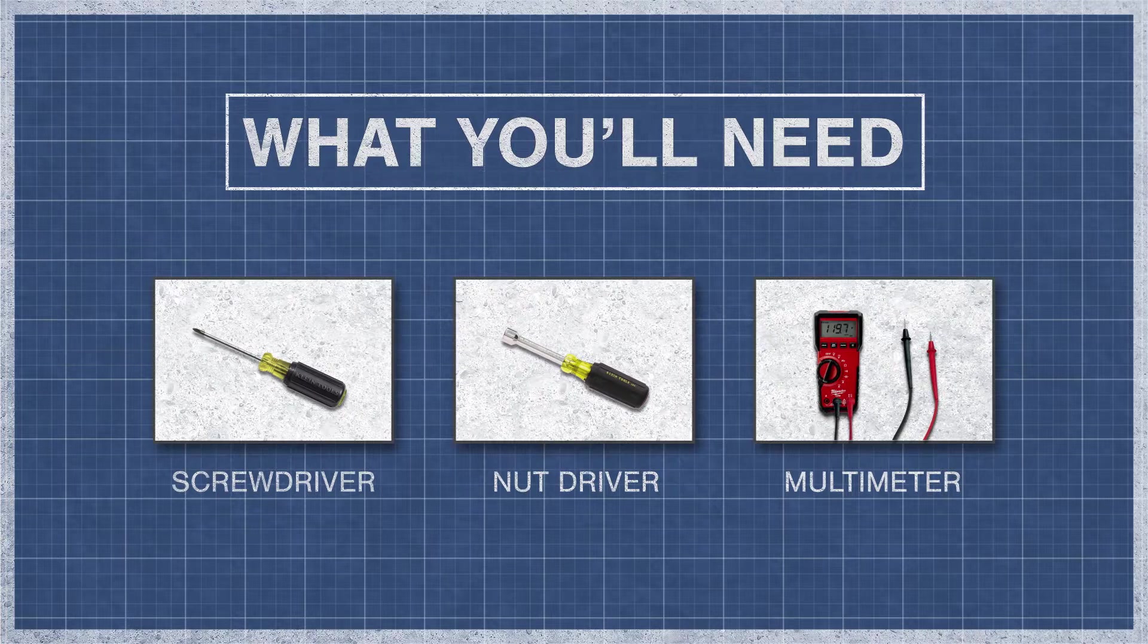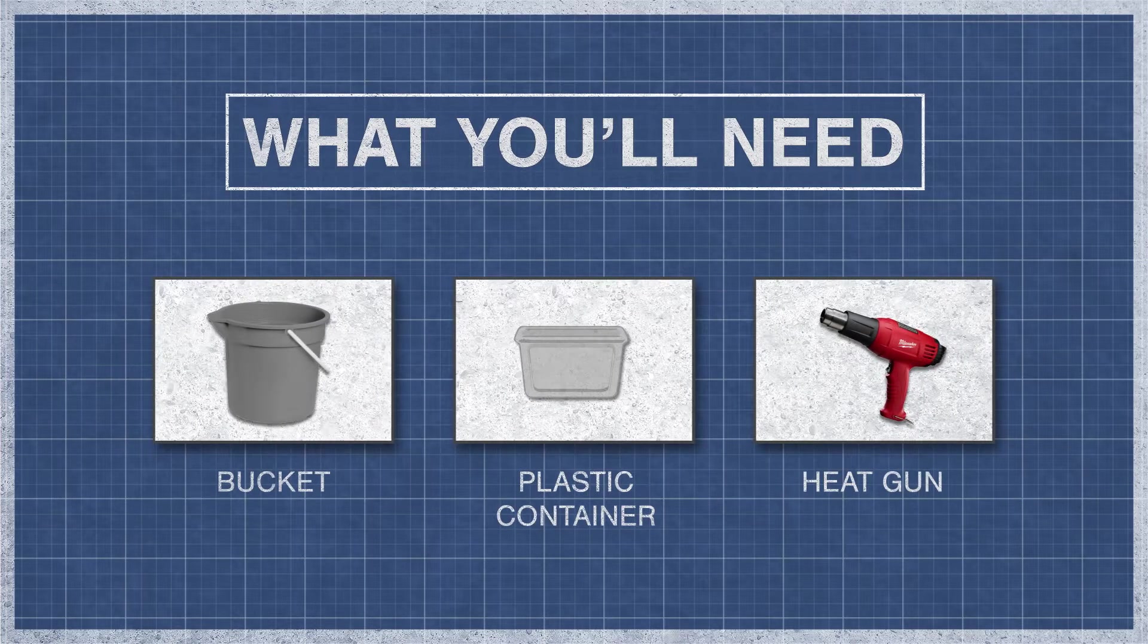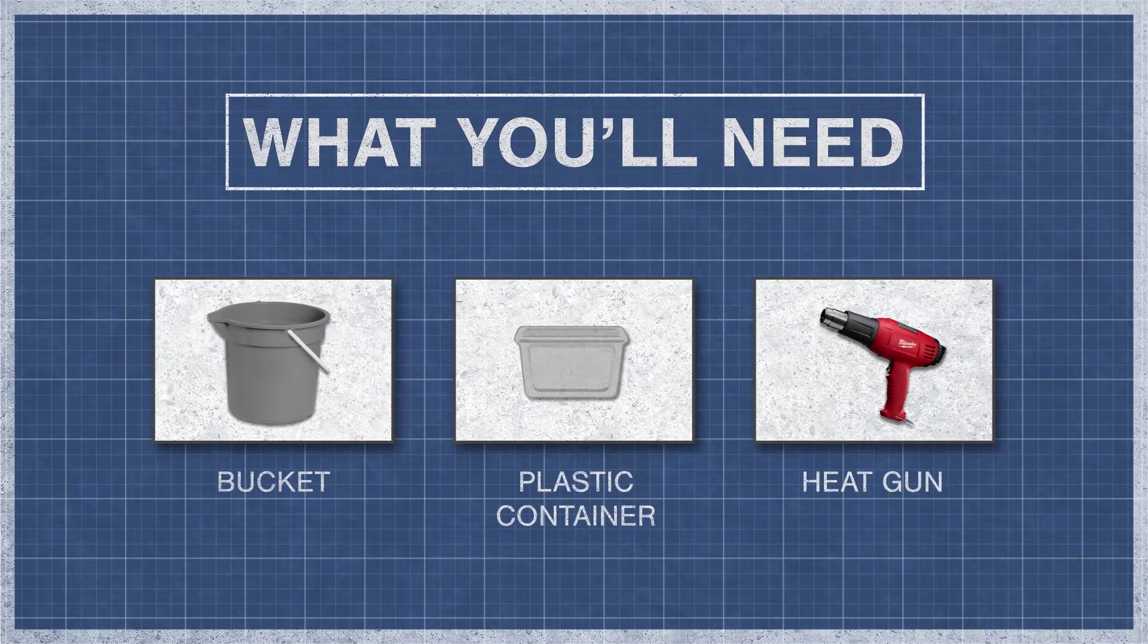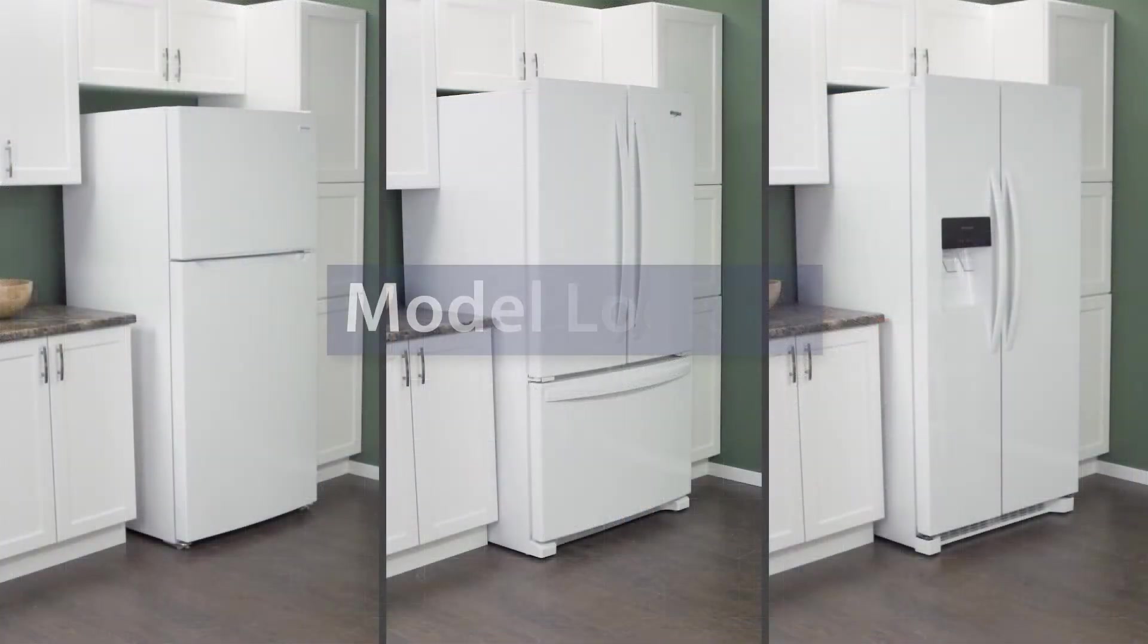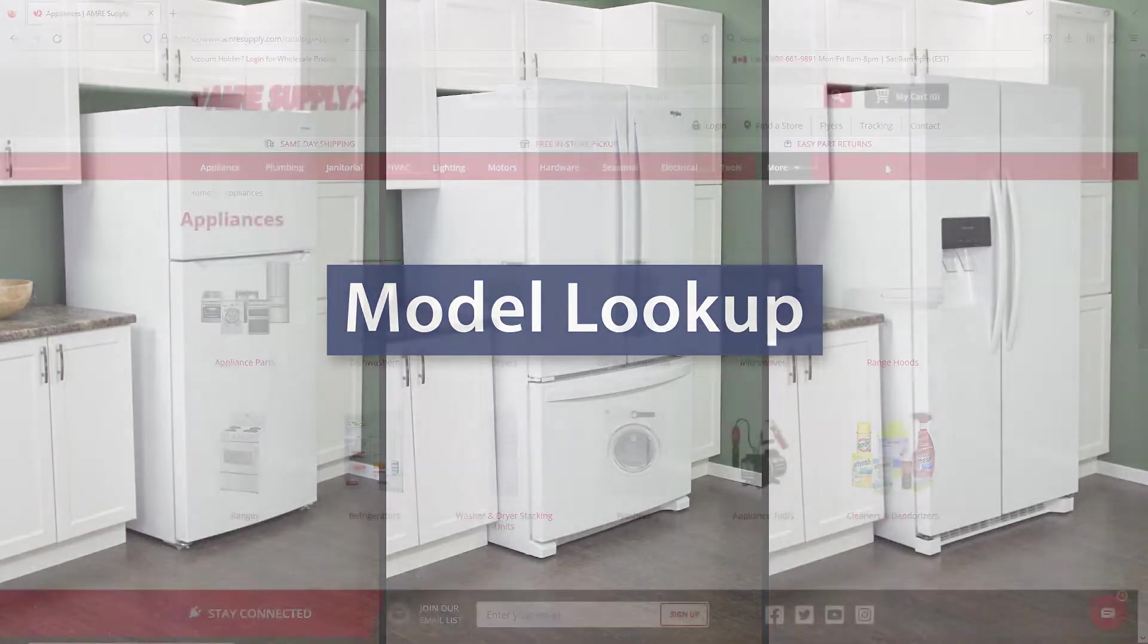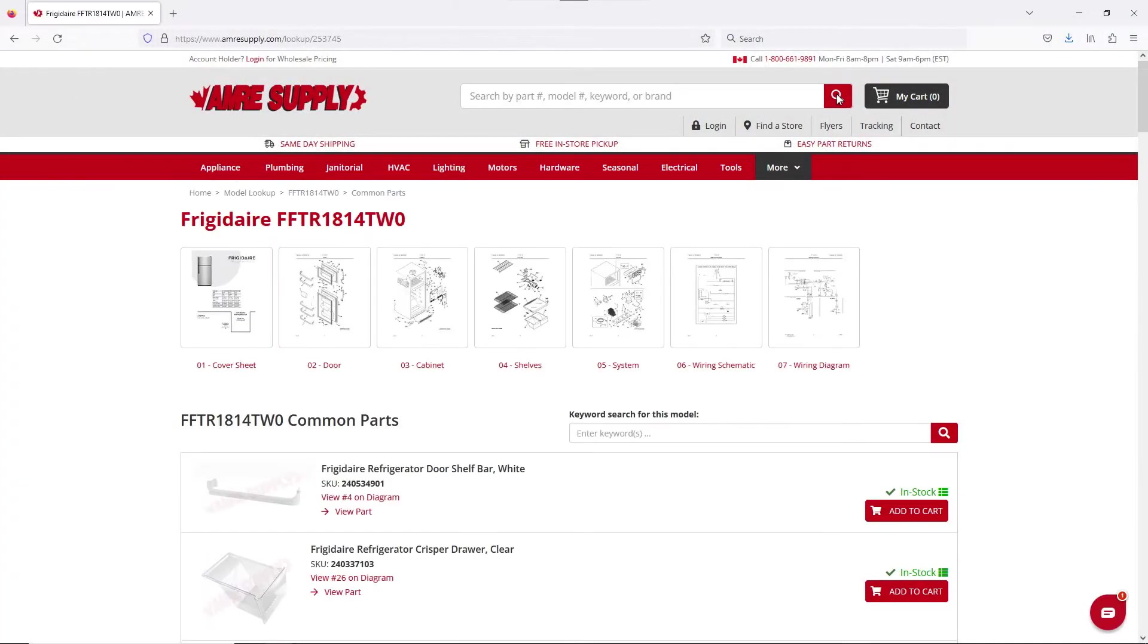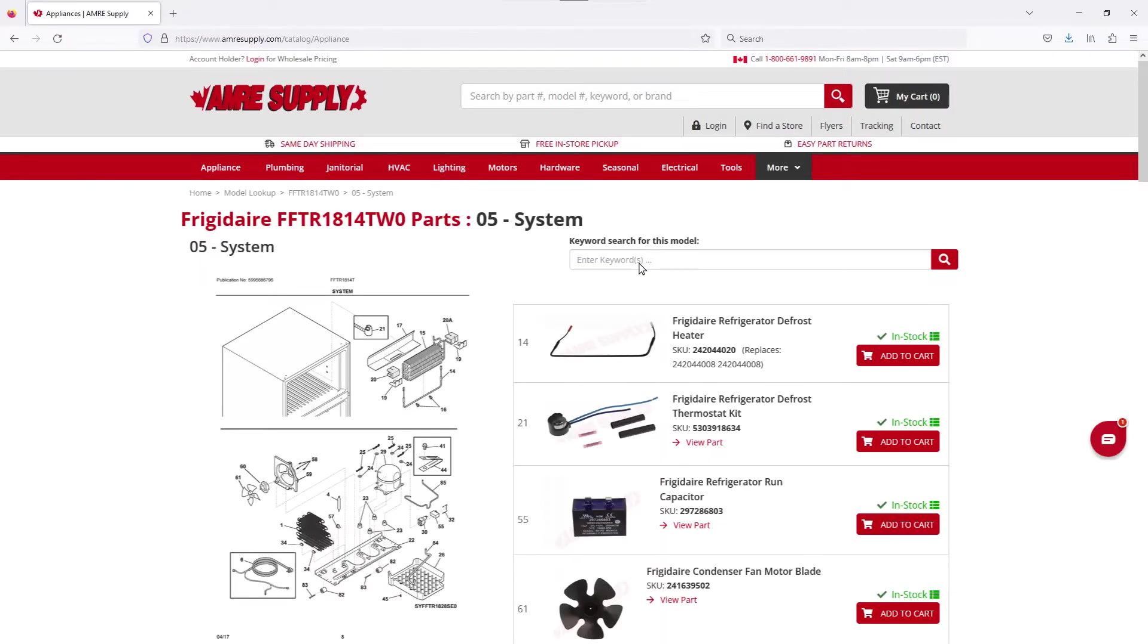To begin, you might need a screwdriver or nut driver, and a multimeter. You might also need a bucket, plastic container, and a heat gun. Keep in mind there is some variation between models, and not all refrigerators will have the same parts. You can enter your model number on the AIM Resupply website to see a parts breakdown. This can be helpful to show you which parts are in your refrigerator and where they are located.